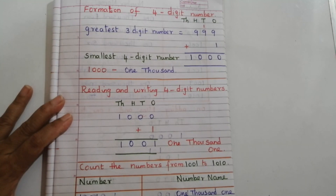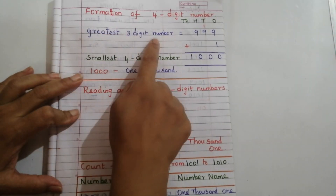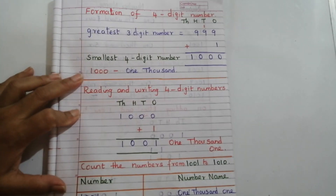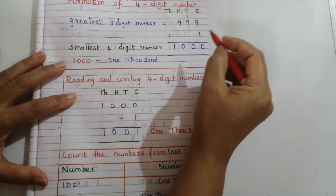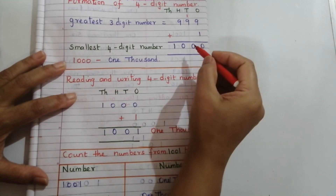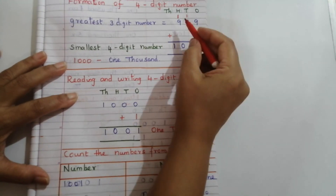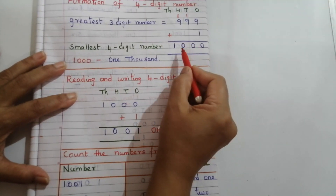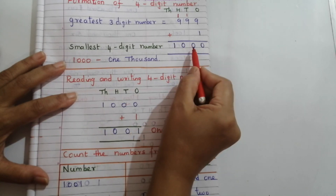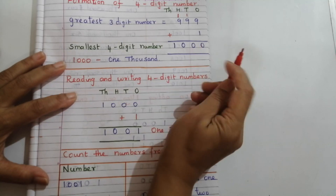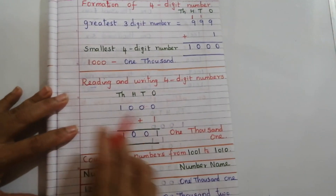Hi, my dear students. Today we are going to discuss four-digit numbers. We all know the greatest three-digit number is 999. If we add one to that number: 9 plus 1 is 10, write 0 carry over 1; 9 plus 1 is 10, write 0 carry over 1; again 9 plus 1 is 10 — we get a four-digit number. This is 1000. One thousand is the smallest four-digit number. 'Th' represents the thousands place.